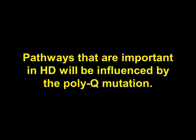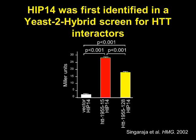HIP-14 was first identified ten years ago in 2002 — it's now DHHC17 — and it was identified in a yeast-two-hybrid screen for huntingtin interactors. Most importantly, HIP-14 has significant modulation in terms of its interaction with huntingtin, and this is modulated by the size of the mutation in the mutant protein: with increasing size of the polyglutamine expansion, there is less interaction.